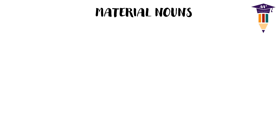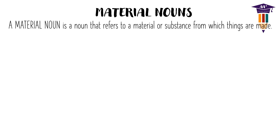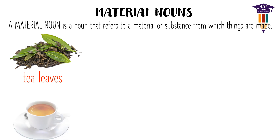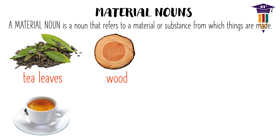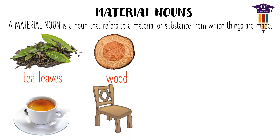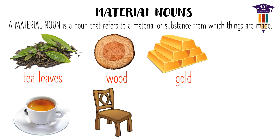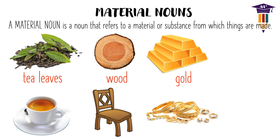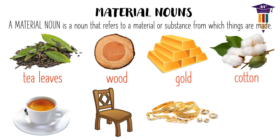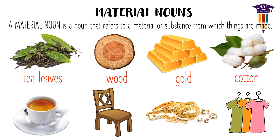Fourth, material nouns. A material noun is a noun that refers to a material or substance from which things are made. Examples: tea leaves is a material noun and tea is made from it; wood is another example and we make various articles from it; gold, a natural substance, is also a material noun and many different jewelry and ornaments are made from it. Another example is cotton — the clothes we wear and many other similar items are also made from cotton. Here tea leaves, wood, gold, and cotton are examples of material nouns.